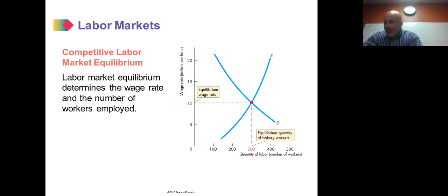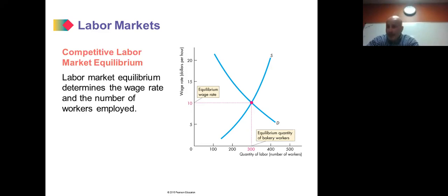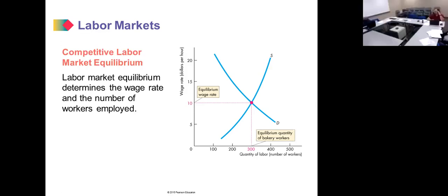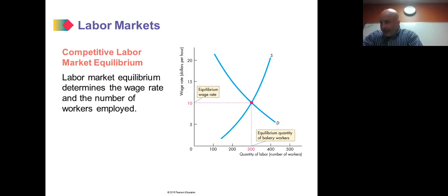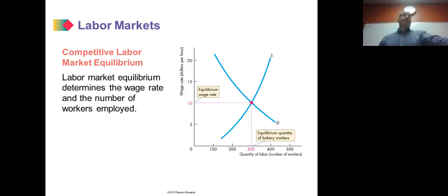If the wage rate rises above $10 an hour, the quantity demanded decreases and the wage rate would fall back. If the wage rate is below $10 an hour, quantity demanded would exceed quantity supplied and the wage rate would rise. This equilibrating process also played out after the 2008 recession, when job seekers in 2009 and 2010 found that negotiating power had largely shifted to employers.